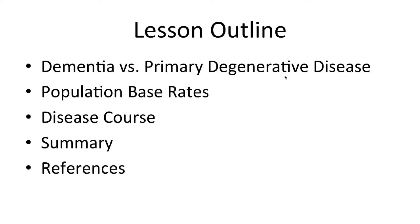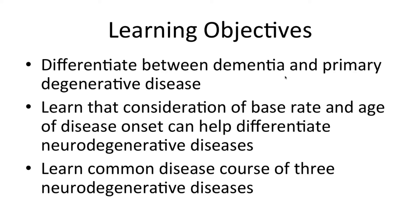As a general overview, I will first focus on the difference between the term dementia and primary degenerative diseases. Population base rates will also be discussed in the context of natural history and the course of the disease. During this presentation, I hope that you will learn how to differentiate between dementia and primary degenerative disease, learn that consideration of base rate and age of disease onset can help to differentiate neurodegenerative diseases, and learn the common disease course of three neurodegenerative diseases.